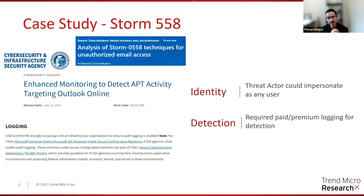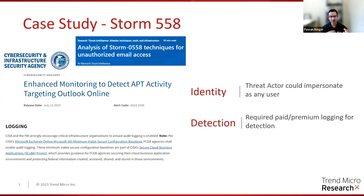Starting with this case study around the ugly threats in the cloud and cloud-native space — this is very recent, just from July. Microsoft shared details about an attack carried out by a threat actor called Storm 558. It's a Chinese threat actor. They took advantage of some stolen keys and could impersonate any user on Azure. Some non-commercial accounts were compromised. It exposes a vulnerability in the cloud where identity is such a big piece, and the keys that are supposed to grant access to services were themselves compromised.